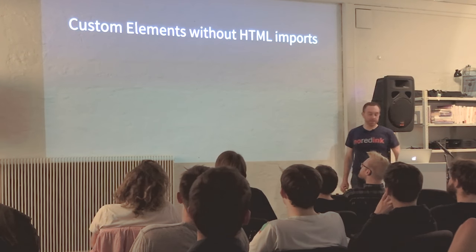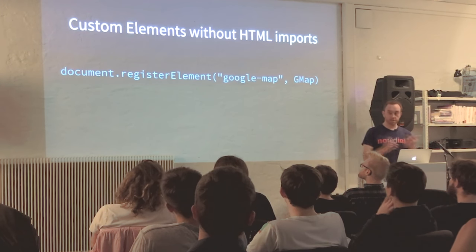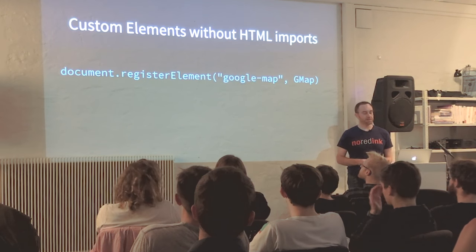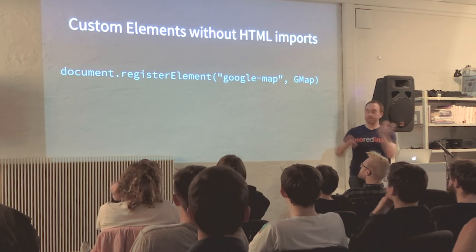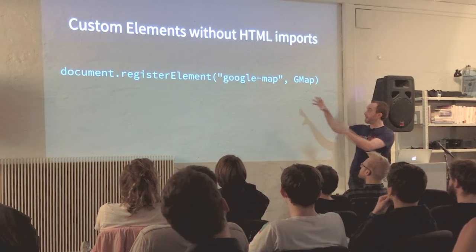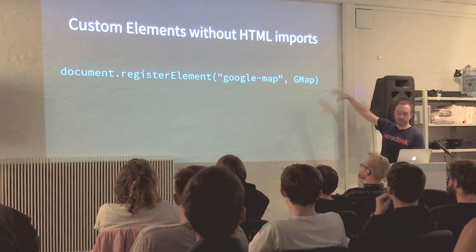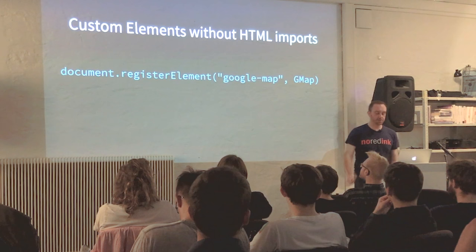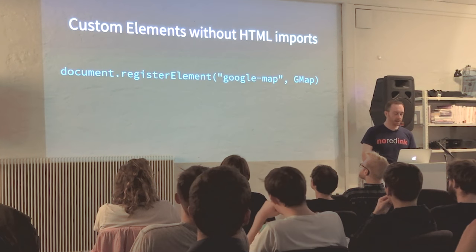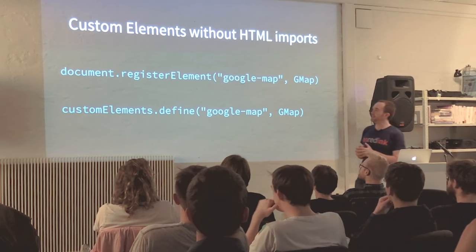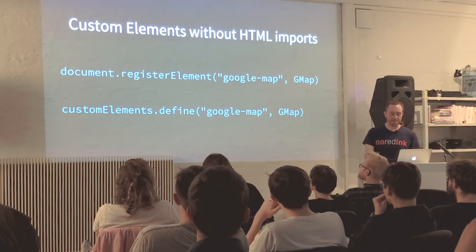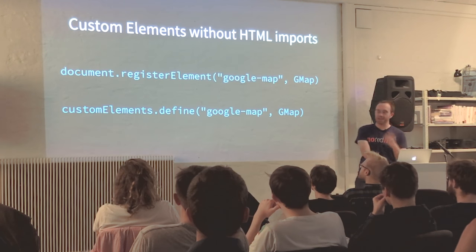There is a way to do this without HTML imports, which is just using JavaScript. Currently in the polyfill it's called document.registerElement — you'd say 'google-map' for the name of the tag and give the implementation. I've heard this is getting renamed to customElements.define, so that may be a different name when it lands.